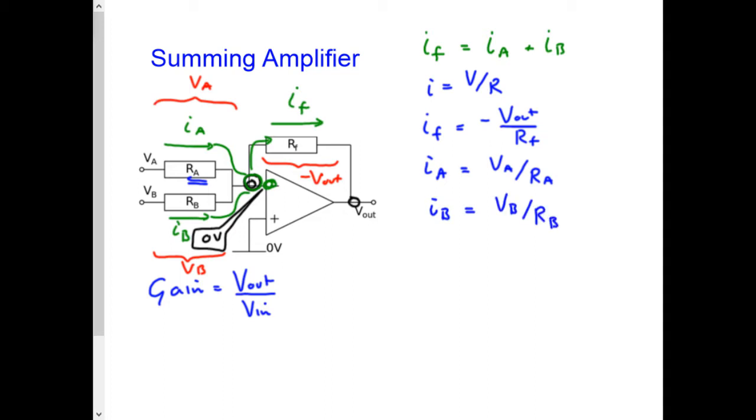Combining those all together, I get minus Vout over RF equals VA over RA plus VB over RB.